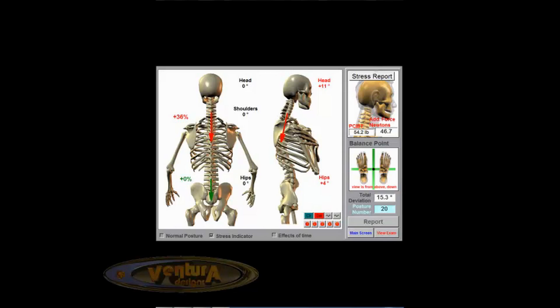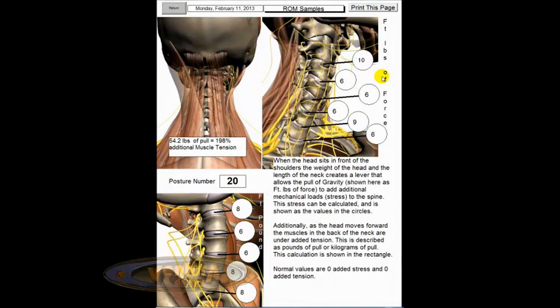When you click on that button, a new screen opens up that shows a summary of the important stress measurements that PosturePro makes. On the left-hand side, we've created a field that shows the additional pounds of tension pull in the posterior cervical muscles, and then we also estimate how much additional muscle tension that is.